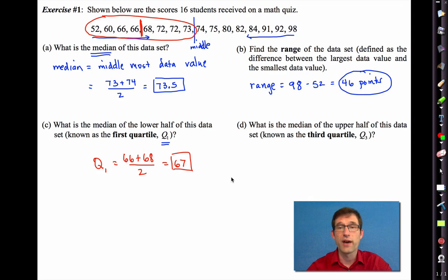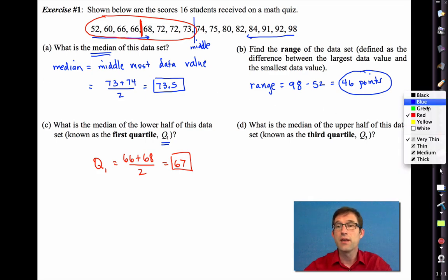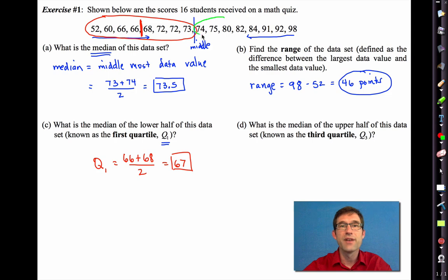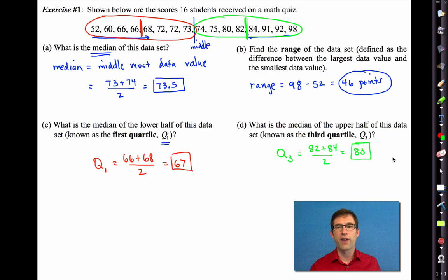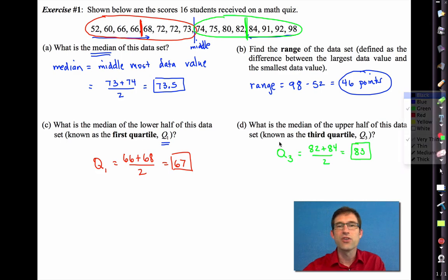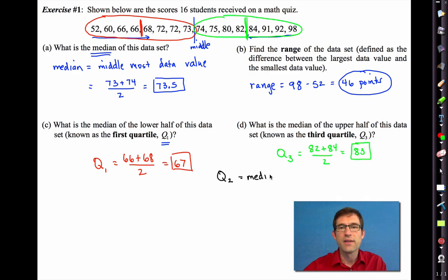We can also talk about the third quartile, q3. That's going to be the median of the upper half of the data set. All right. Here's my upper half. And again, because it's got eight values in it, our q3 is going to be right there. So, it's going to be the average of 82 and 84, which will give me 83. So, 83, if you will, sort of divides the upper 25% from the sort of third 25%. You might actually wonder to yourself, where did q2 go? Where is the second quartile? Well, the second quartile is the median, right? It's the one that's right in the middle.